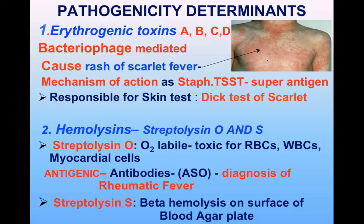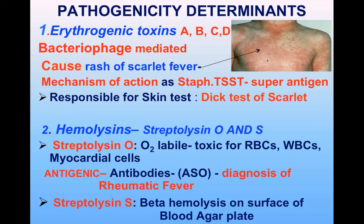There are two types of hemolysins: streptolysin O and streptolysin S. Streptolysin O is inactivated by oxidation — it is oxygen labile — and causes beta hemolysis only under the agar surface. It is highly antigenic; antibodies to it are known as ASO (anti-streptolysin O), and ASO titers are important in the diagnosis of rheumatic fever. Streptolysin S is oxygen stable, produces beta hemolysis on the surface of blood agar, but is not antigenic.